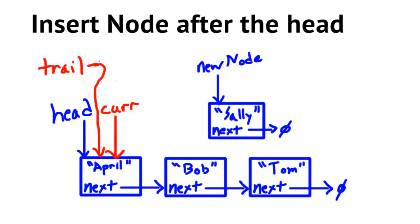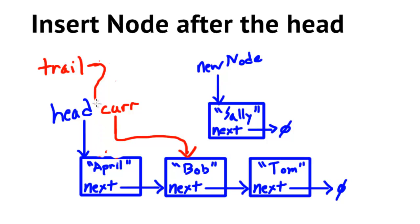First we set the trailing pointer to point to the same thing current is pointing to, then we update current to point to the next node — current now points to Bob. We do the comparison again and find that Sally should come after Bob. So we first update trail to point to what current is pointing to — Bob — and then update current. It's very important we get those in the correct order, otherwise things don't work out.